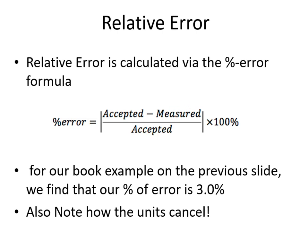Percent error equals the accepted value minus the measured value, divided by the accepted value — that's the numerator, the absolute error, divided by what it should have been. That gives you a measure of how big your error is compared to the size of the thing you're measuring. We then multiply by 100% to express it as a percentage. For our book example, we take 13 pages divided by 443 pages, giving a percent error of about 3%.